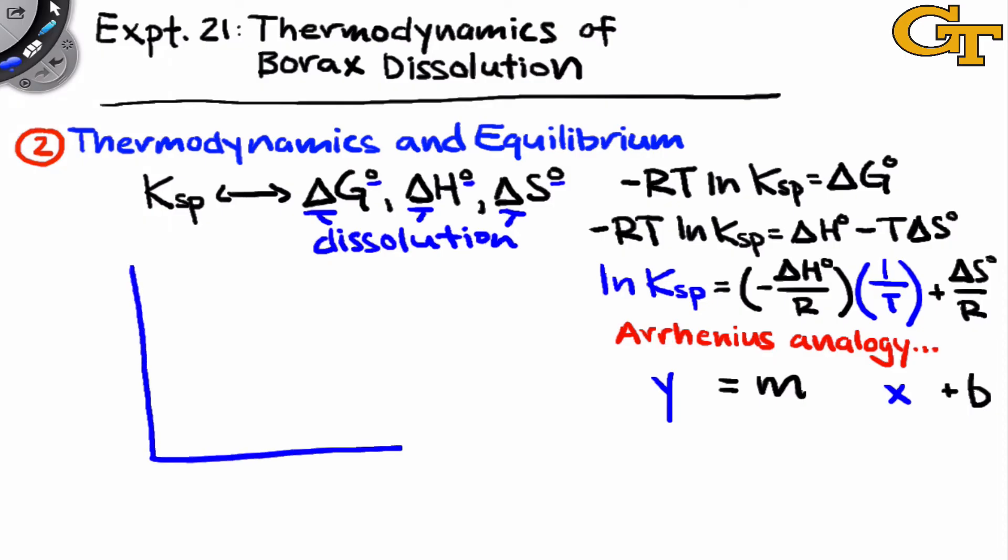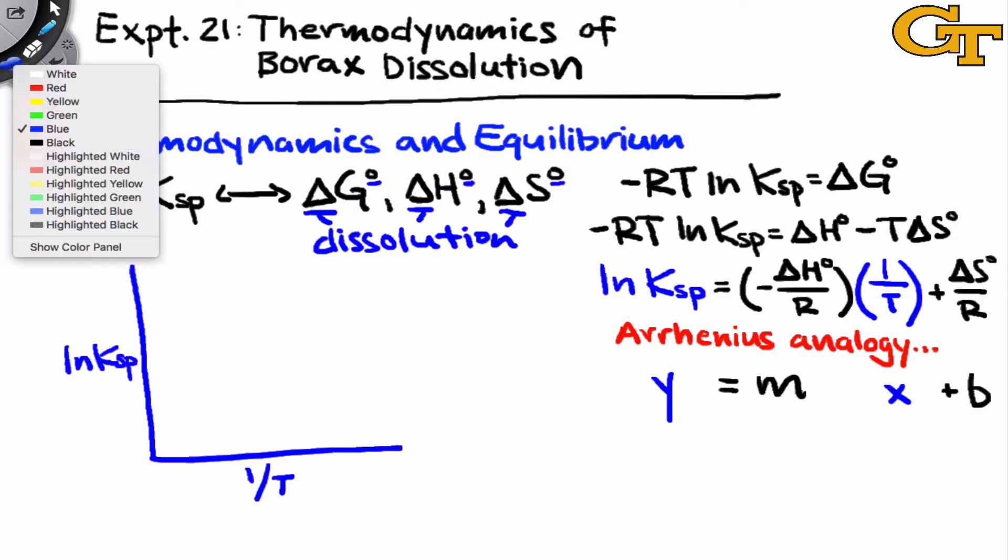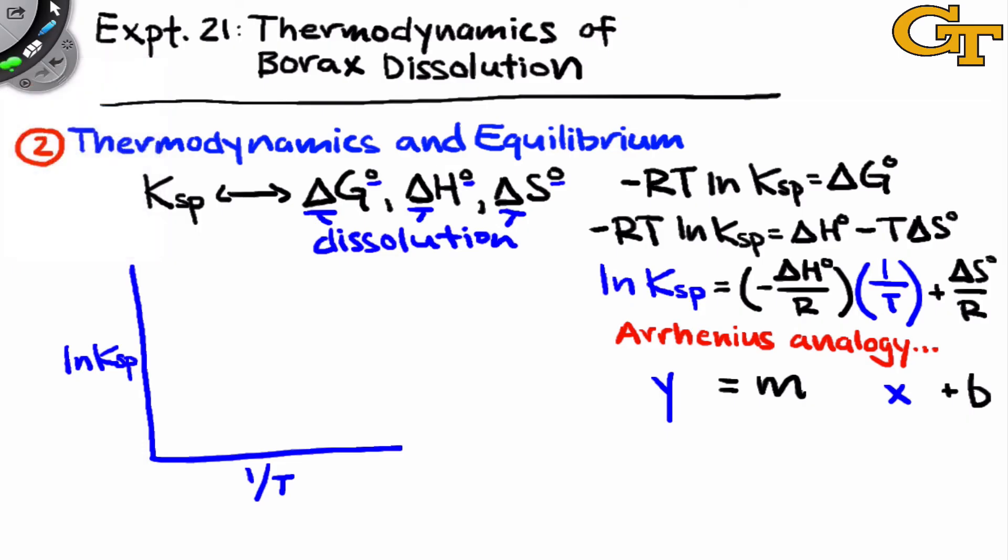If we plot 1 over T, the independent variable, on the X-axis, and the natural log of Ksp, the dependent variable on the Y-axis, we should expect to get a line.